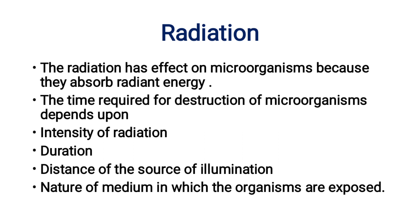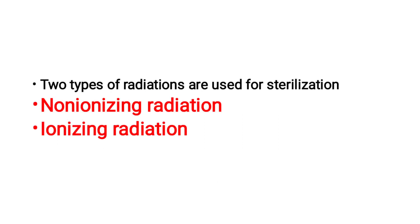The next method is known as the Radiation Method. Radiation has an effect on microorganisms because they absorb radiant energy. The time required for destruction of microorganisms depends upon the intensity of radiation, duration, distance from the source of illumination, and the nature of the medium in which the organisms are exposed. Mainly two types of radiations are used for sterilization: non-ionizing radiation and ionizing radiation.